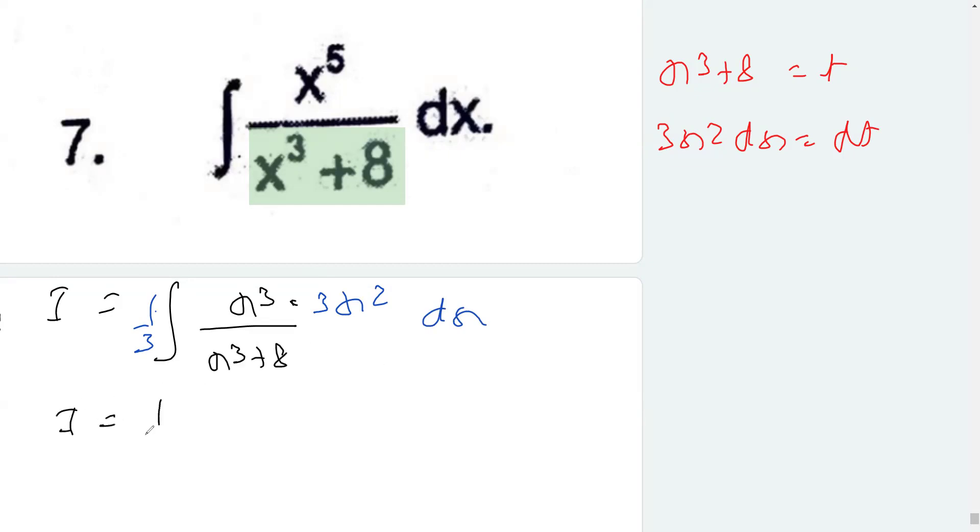Now, after substituting the value, I can substitute this with t, and from here x cubed equals t minus 8. Am I correct? This is x cubed, and x cubed is t minus 8, and this whole thing is dt.